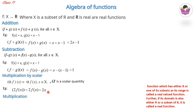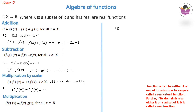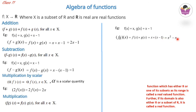For multiplication: (fg)(x) = f(x) · g(x). Example: with f(x) = x and g(x) = x − 1, then (fg)(x) = x(x − 1) = x² − x.